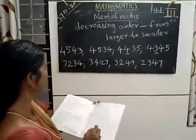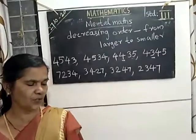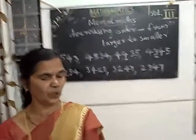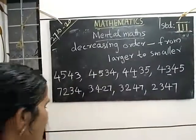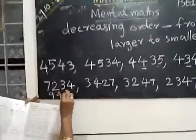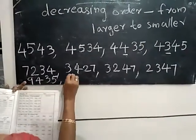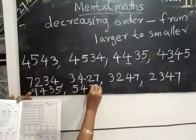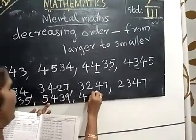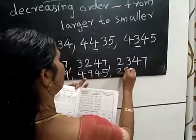Okay, then next number: 5,439; 2,935; 4,945; 9,435. Which is the largest number there? 9,000 — you start with 9,435. That is the largest number. The next number: 5,000 is there, so you write 5,439. Then 4,945. The smallest number is 2,935.